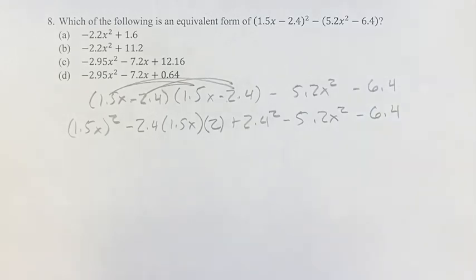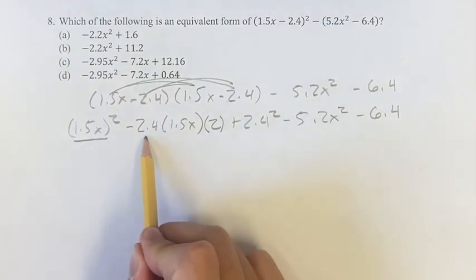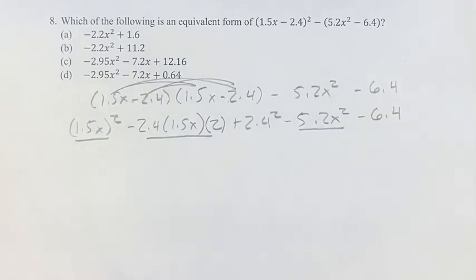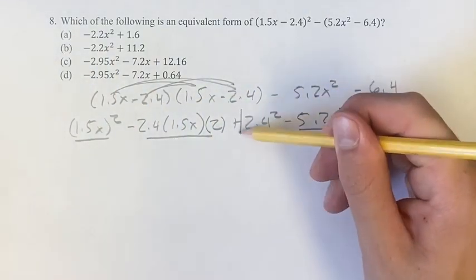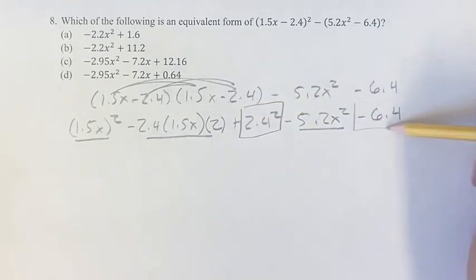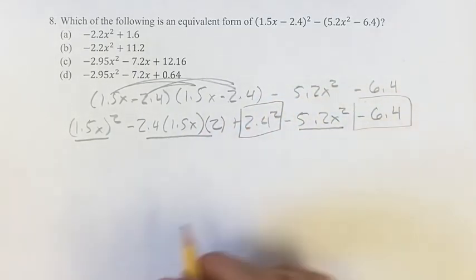And if we do this, we can combine like terms, distribute out everything, and continue to solve this. Or we can say, okay, we have an x squared term, x term, and an x squared term. And we can ignore those for a second. For constants, we have 2.4 squared and negative 6.4. So let's just calculate what that is.